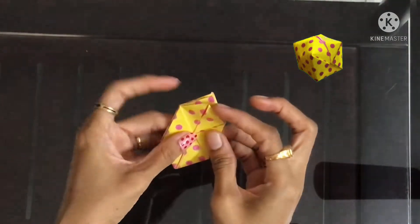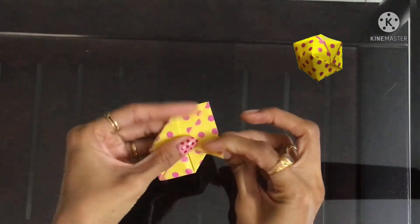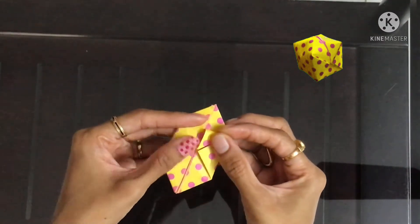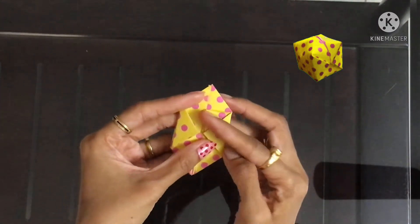Now bring down this flap and fold it towards the side to create a fold, then fold that triangle in half.